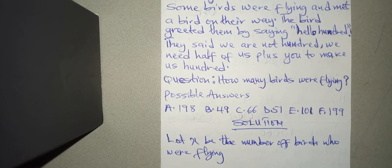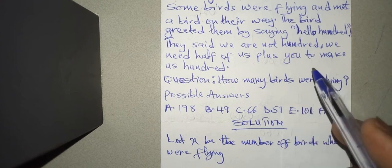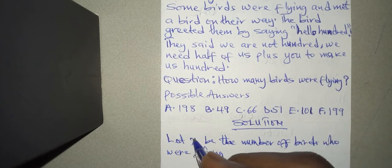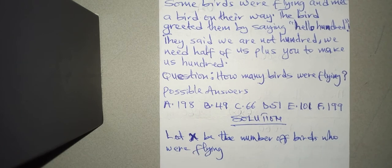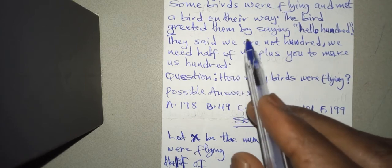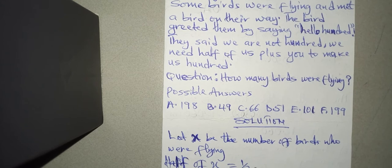All right, so we are going to say that, when the question goes on to say that to get them to be hundred, they need half of them. And half of them, them here is the x which we have assigned to the number of birds who were flying. All right, so we are going to say that this is, so half of us, and us here is the x we are talking about here, so half of x will give us this.